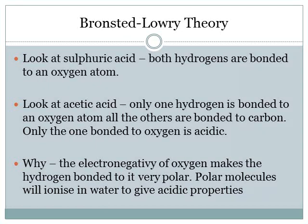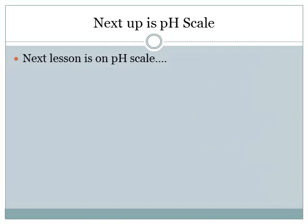Just to recap: the electronegativity of the oxygen is what makes the hydrogen bonded to it very polar and very positive. Polar molecules will ionise in water to give the properties that we desire. From this lesson, what you need to know is your definition of an Arrhenius acid and the Bronsted-Lowry acid. You also need to be able to define what a conjugate acid and a conjugate base is, and to know what monoprotic and polyprotic acids are. In the next lesson, we're going to look at the pH scale and have a look at some calculations on that.